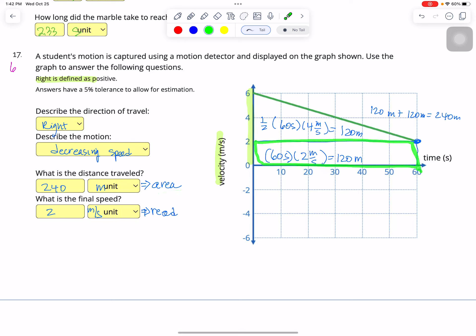And base times height. My base is 60 seconds. My height is 2 meters per second. And so that gives me 120 meters. And then to that, I add the area of the triangle. And so that's one half times my base is 60 seconds. My height is 4 meters per second, because I'm just looking at this height right here. And that's 120 meters. I add those together and I get 240 meters. So 240 meters. And then the final speed, all I need to do is read off the graph. And so I read that point here, the final speed. And so that is 2 meters per second.